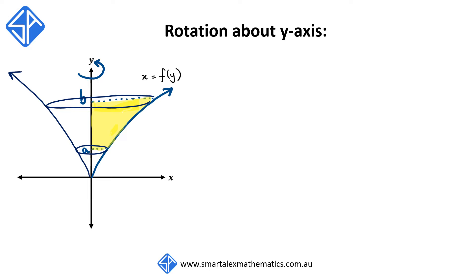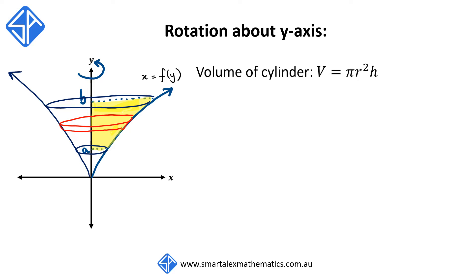In order to find the volume of this solid, we can think of it as being made out of a series of very very thin cylindrical disks going from a to b, so that if we're able to find the volume of each disk going from a to b and add them all up, we would then have the volume of the solid. The volume of a cylinder is given by the formula V is equal to pi r squared h. Pi r squared is the area of the circular cross-sectional area of the cylinder, and h is the perpendicular height.